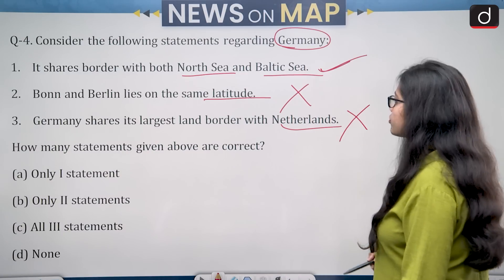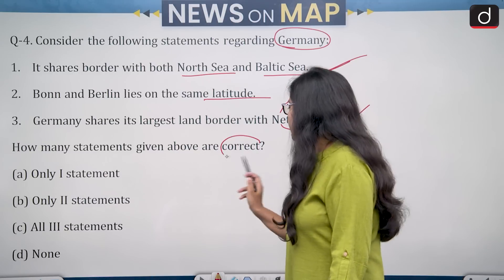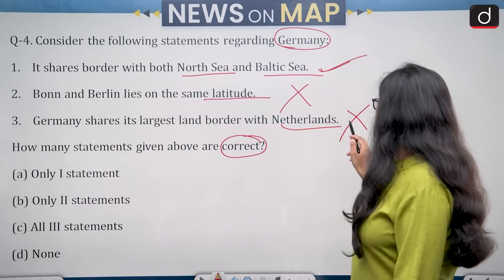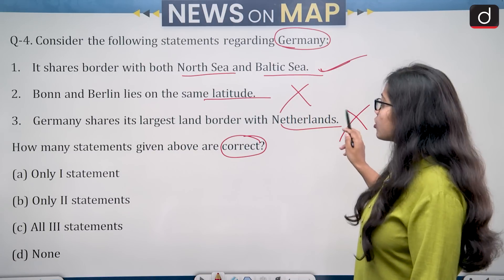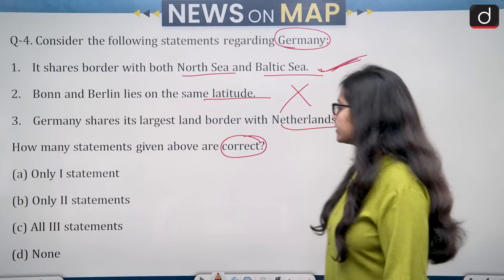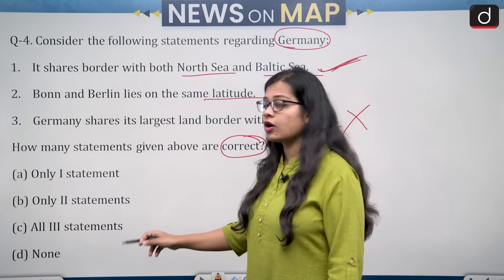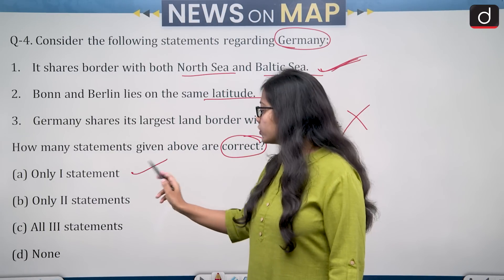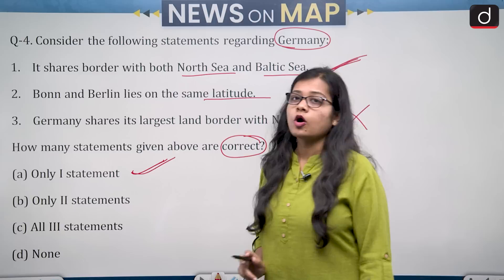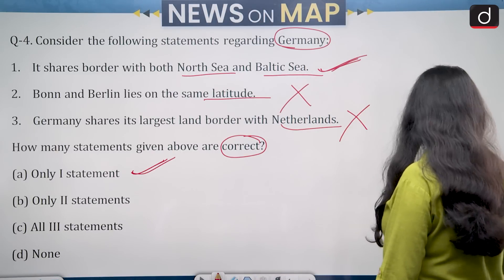The question asks how many statements are correct. The second statement is wrong, the third is wrong, and only the first is correct. So only one statement is correct, making option A the correct answer.